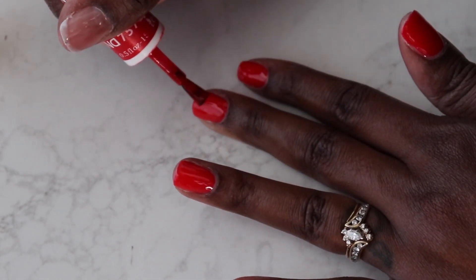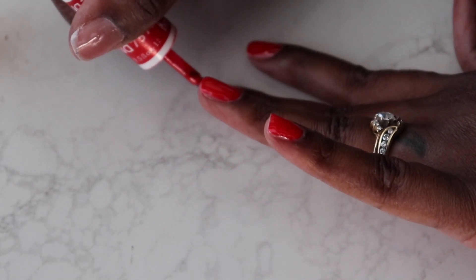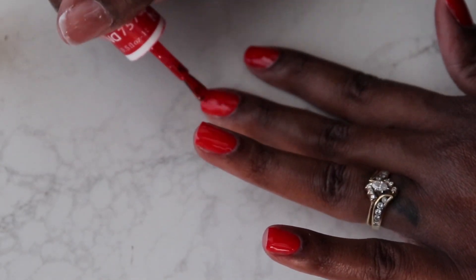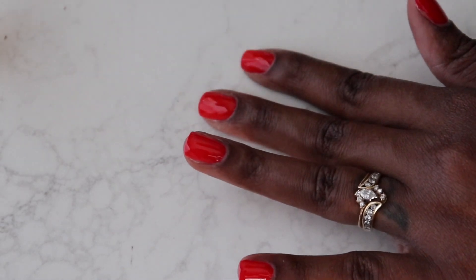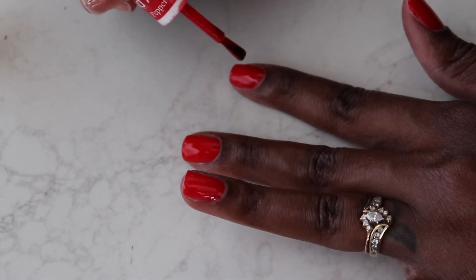All right, so this is going to go a little faster because I am applying the second layer of polish. If you do what I said the first time with the first layer of polish and you get as close to the cuticle as possible with the second layer, you don't have to work so hard.